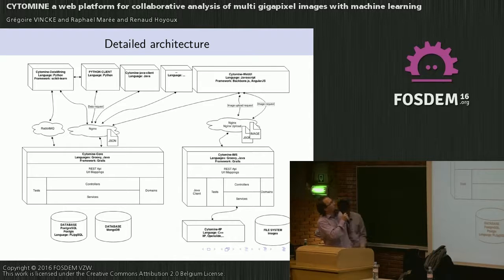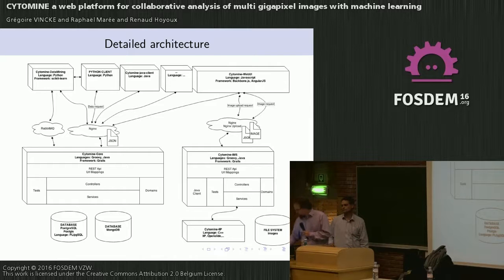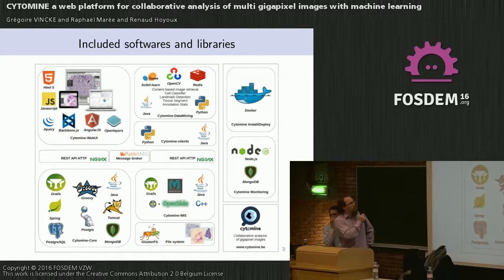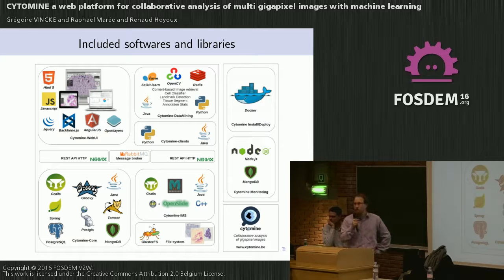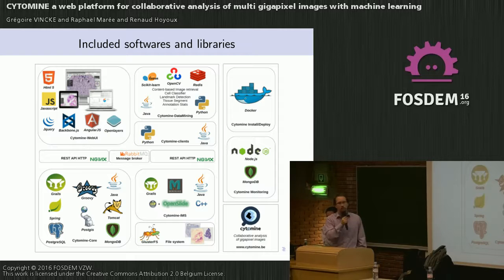The other components are RabbitMQ as a message broker, the databases PostGIS and MongoDB, image libraries IIP server and OpenSlide, and of course Nginx as a proxy and load balancer. For the web UI it's HTML, CSS, and JavaScript frameworks. For the core and IMS there are Groovy, Java, and Tomcat. For the IMS part we have OpenSlide and IIP server, which are C and C++ code.